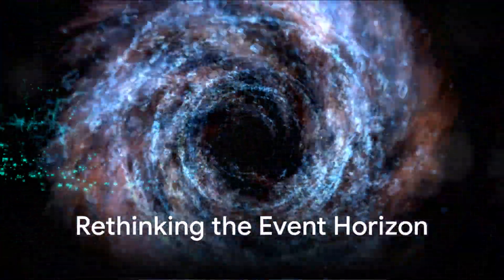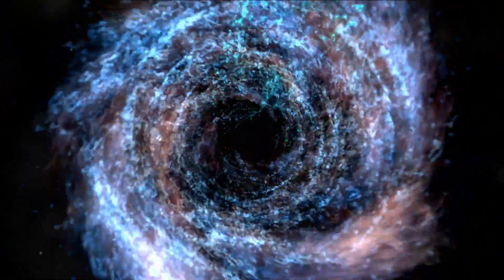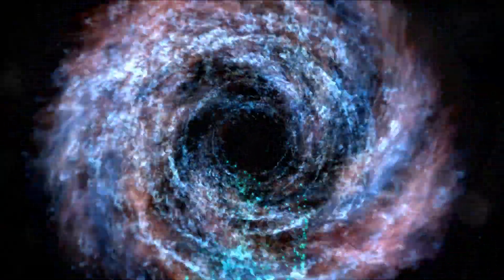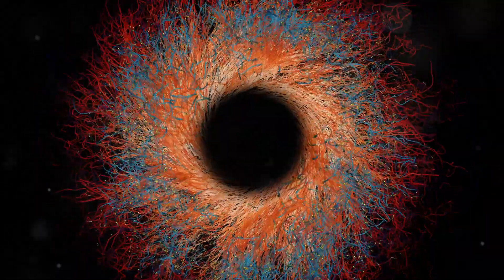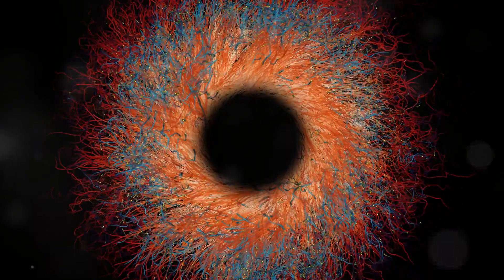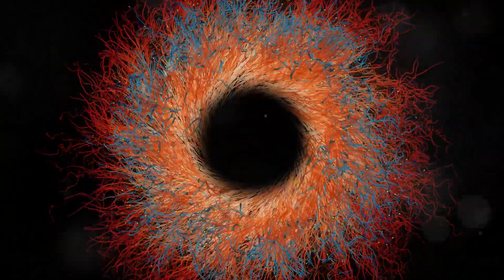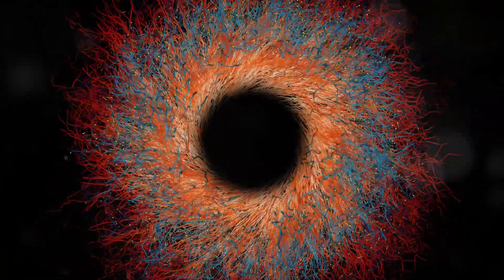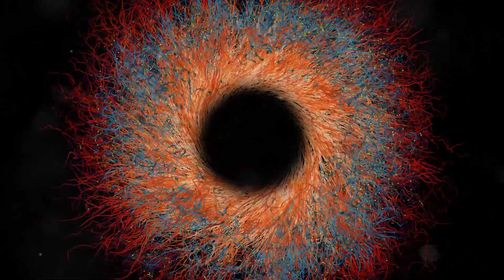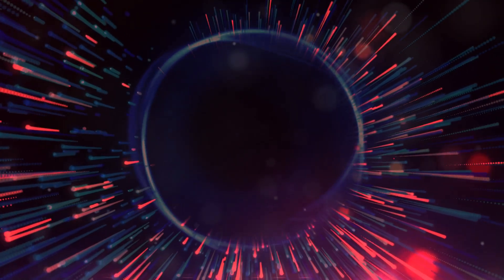Some physicists believe that we need to radically rethink the nature of the event horizon itself to resolve the information paradox. One idea, known as the fuzzball model, proposes that black holes aren't empty pits in space-time but are actually giant, fuzzy balls of strings, the fundamental building blocks of the universe according to string theory. In this model, the event horizon isn't a sharp boundary but a fuzzy region where space-time is highly curved and warped. Information falling into a fuzzball wouldn't be lost but would be scrambled and encoded in the complex interactions of these strings.